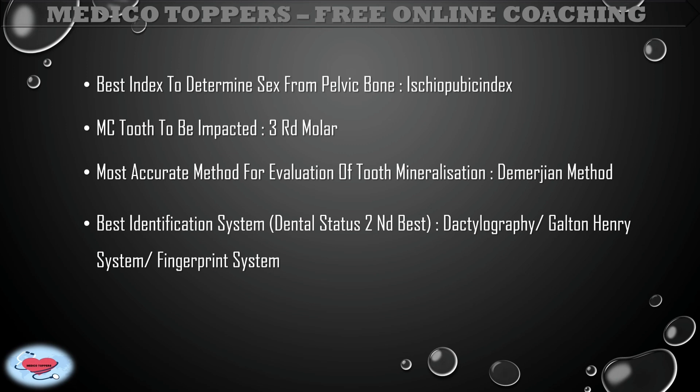The best identification system for human beings is dactylography, also known as the Galton-Henry system or fingerprint system. The second best identification system is dental status.